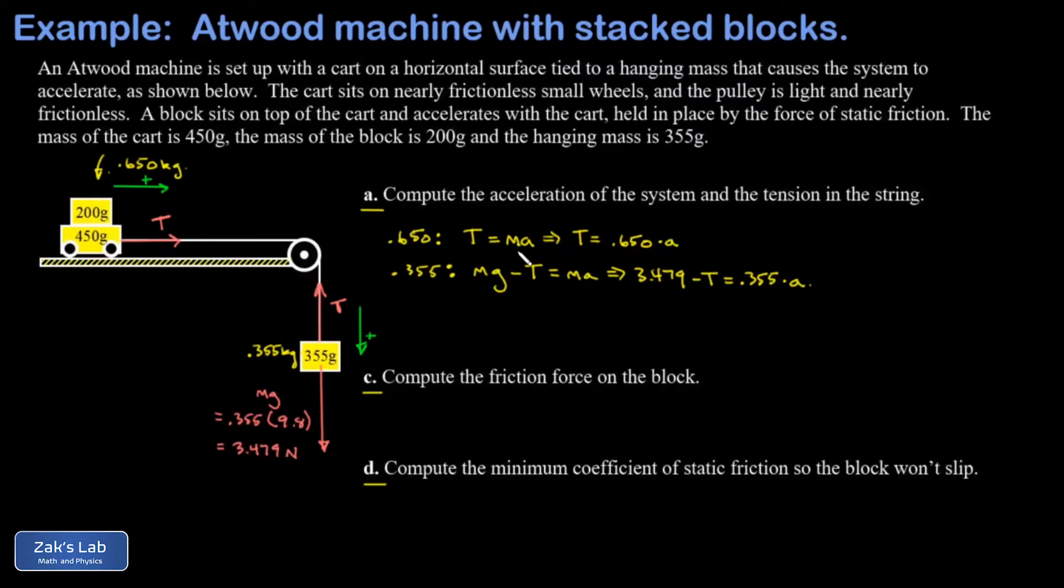to each individual moving piece of the Atwood machine. So now I have two equations and two unknowns. I have T equals 0.650A, and 3.479 minus T equals 0.355A.